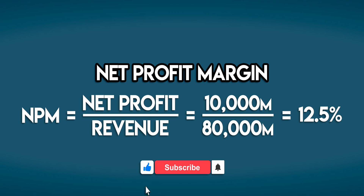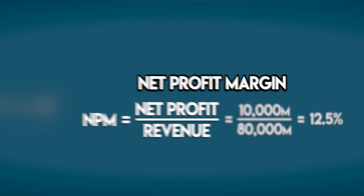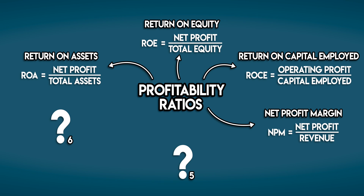Net profit margin tells us how much bottom-line profit a business is able to keep for each dollar of revenue earned — in Edison's case, 12.5 cents on the dollar. It gives us an overall view of a business's profitability because it considers all financial aspects, including cost of sales, operating expenses, and non-operating expenses like interest and tax.